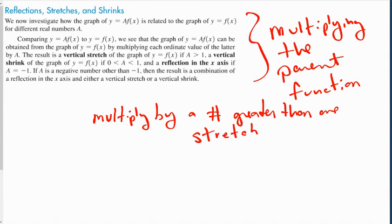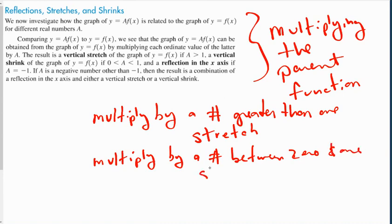If you multiply by a number less than 1 but greater than 0, then we get a shrink. And negative numbers cause reflections.